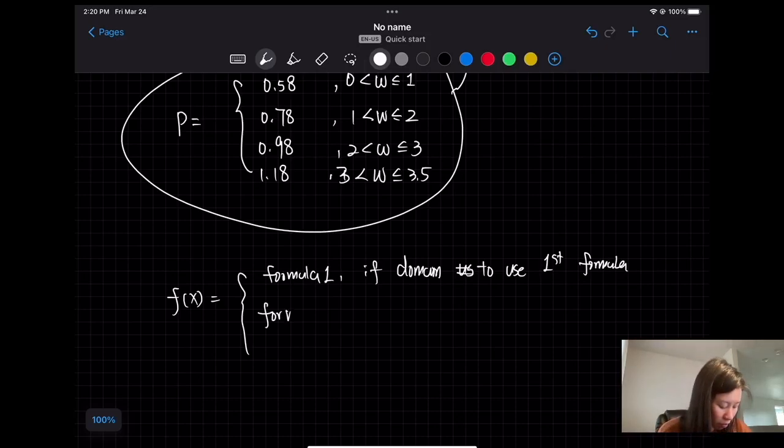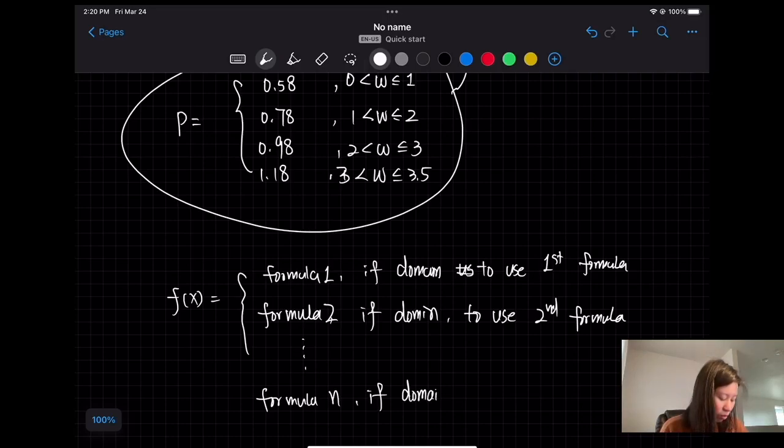And then the second formula if the domain for the second formula. We might have different domains, different domains, and so on. So they might have up to n functions and formulas. Alright, so here is the example I'm going to show you.